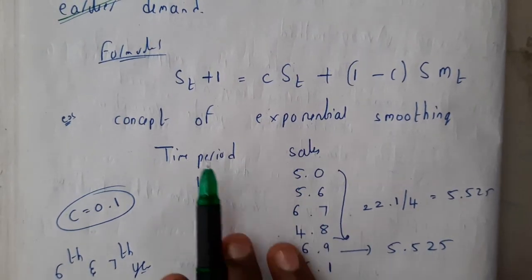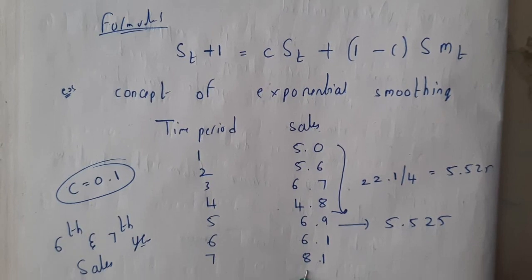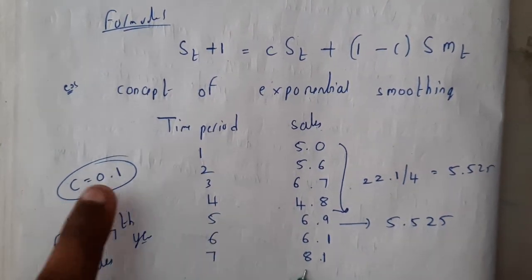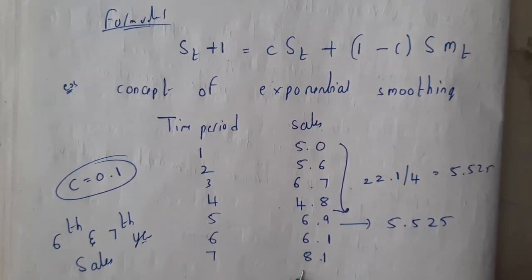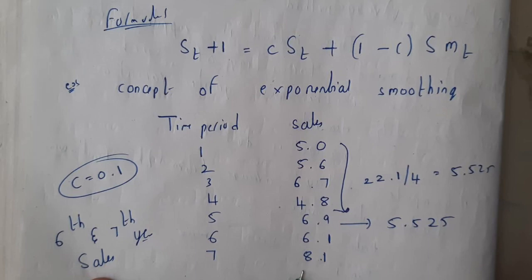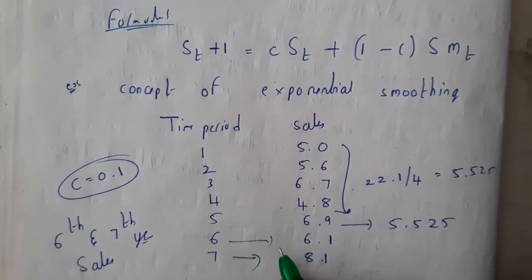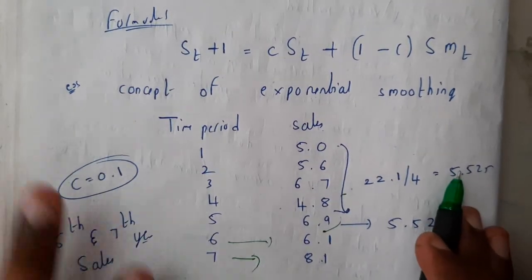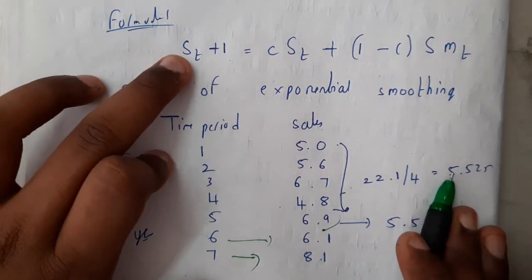In the example, time and sales are given, and the value of c = 0.1 is also provided. We are asked to compute the sixth and seventh year sales. Here c = 0.1, and we are calculating S(t+1). This is similar to the moving average method but uses the formula instead.